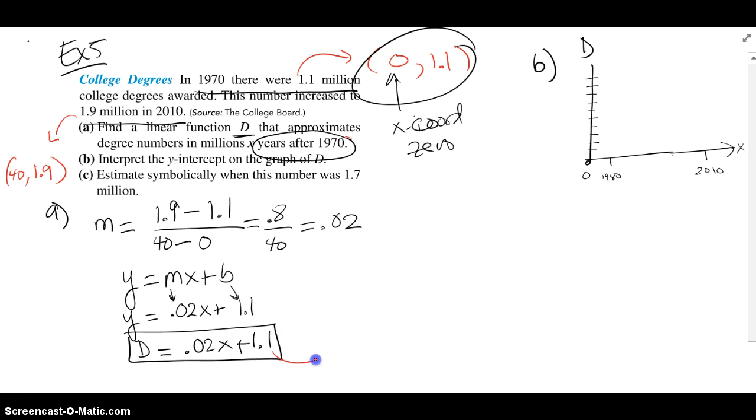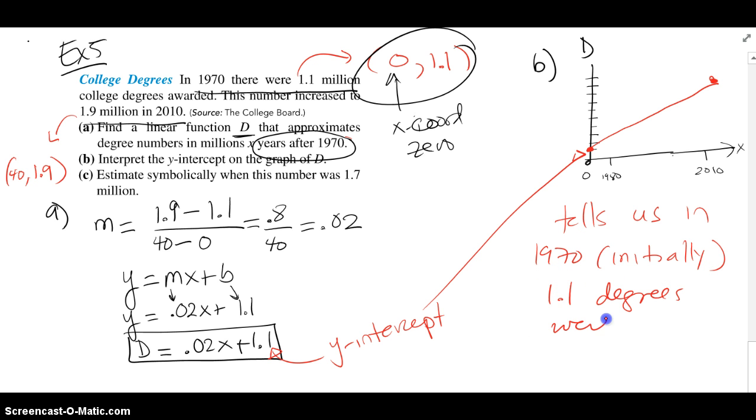Part B says, interpret the y-intercept, so we know this guy represents the y-intercept of this graph. I have my x-axis and my d-axis. I know in the 1970, where we called it to be 0, I have, let's say that's 1.1. I'm going by 0.1s on my d-axis. And then 1980, I could potentially estimate using the equation, but I'm going to go ahead and use what happened in 2010, which was 40 years later, it was 1.9. So I just have a rough sketch, a very, very rough sketch of what's going on. And notice the y-intercept basically tells us that in 1970, or initially, 1.1 degrees were awarded.